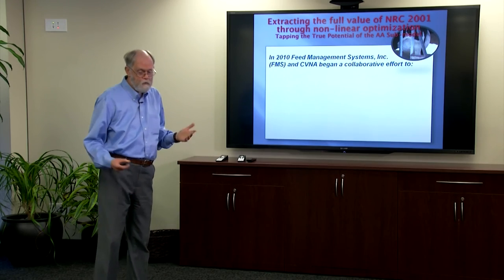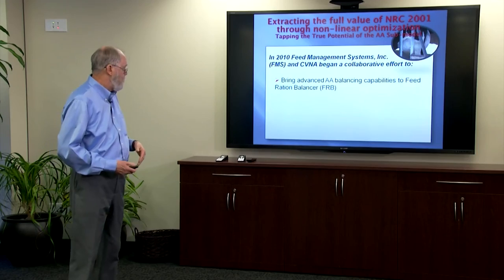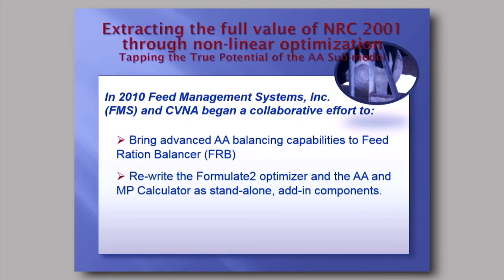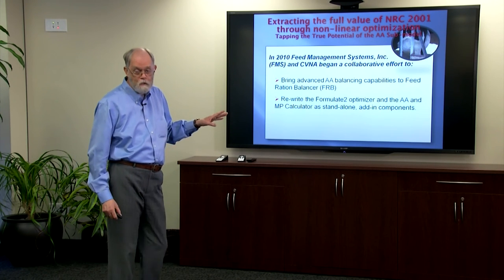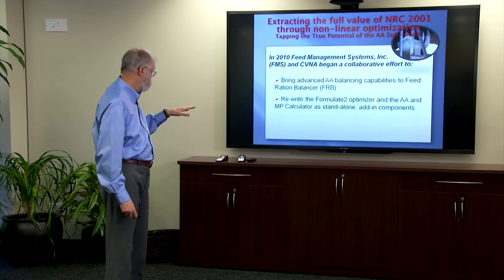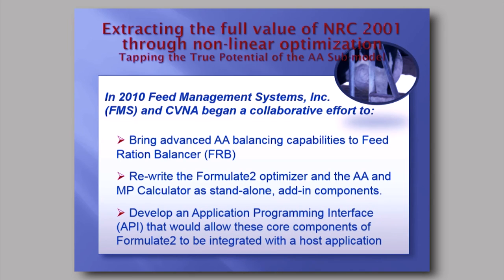In 2010, we began a collaborative effort with Feed Management Systems. Their goal was to bring advanced amino acid balancing capabilities to their diet formulation application, FRB. To do that, we extracted the optimization engine and the amino acid and MP calculator, encapsulated them as standalone executable components that could be added into any diet application implementing the NRC 2001 model. We wrote an application programming interface allowing these components to drop into another application and function as an extension.